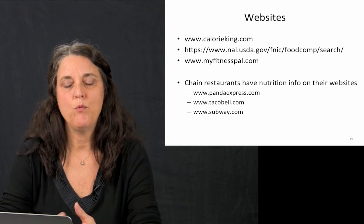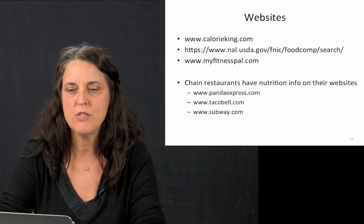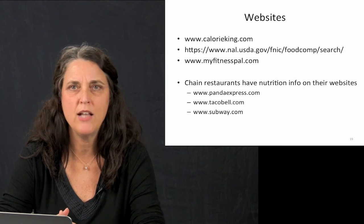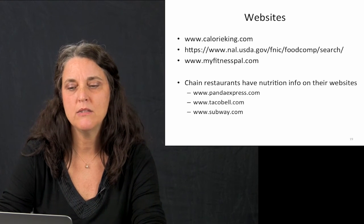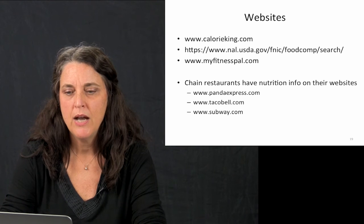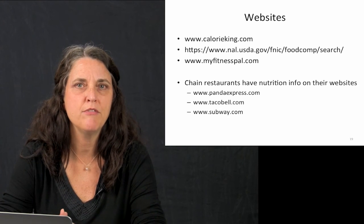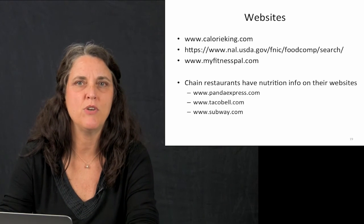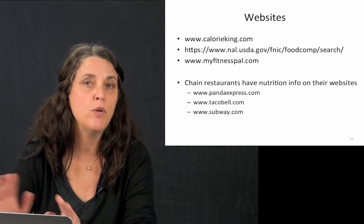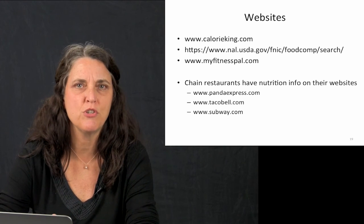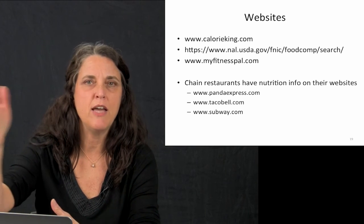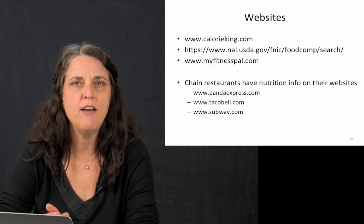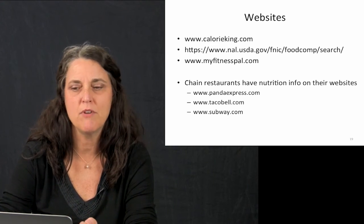Another tool available is websites — I like Calorie King, and the USDA also has a complete list where you can search foods and find information on calories, fat, carbohydrates, vitamins, and so forth. Some people like myfitnesspal.com, which also comes as an app, as does Calorie King. For chain restaurants, you can usually go to www.nameoftherestaurant.com, find a nutrition facts button, pull up the entire menu with nutritional information, and print it. We have people who carry those printouts in their glove compartments so they have them handy.